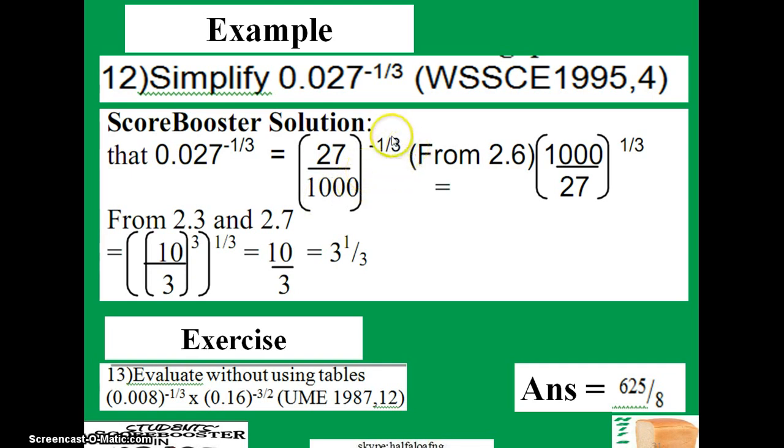The next thing you're going to do is convert the negative sign of the exponents into positive. From rule 2.6, you can do that by taking this 1000, taking it up, and bringing 27 down. You can notice that the negative sign has disappeared.